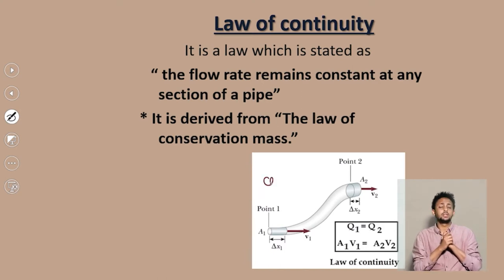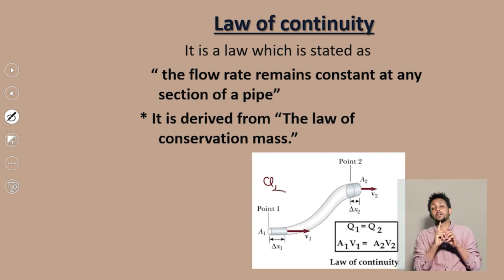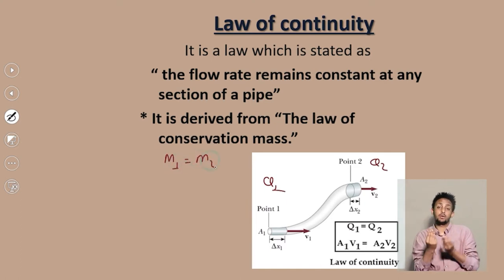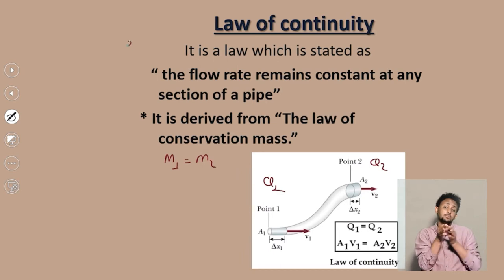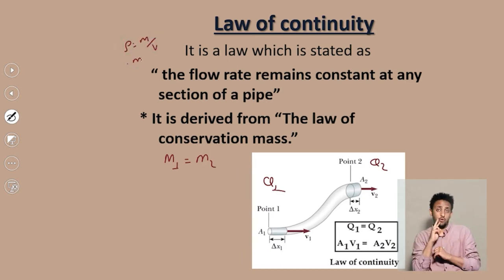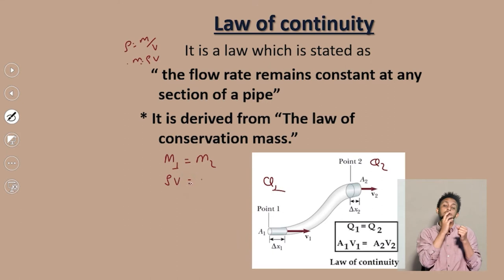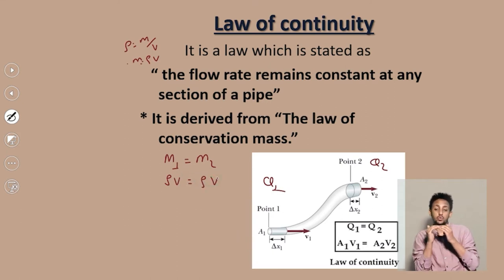The flow rate always remains constant. The flow rate at section 1, Q1, and the flow rate at section 2, Q2, are the same. From the concept of mass, mass at 1 equals mass at 2. Mass can be expressed using density: density equals mass over volume, so mass equals density times volume. Therefore, density times volume at section 1 equals density times volume at section 2.